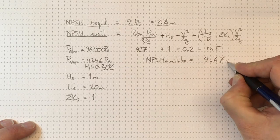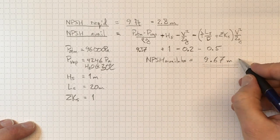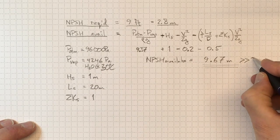So with 9.67 meters of NPSH available, we're much, much greater, well, significantly greater than the 2.8 meters that we require.